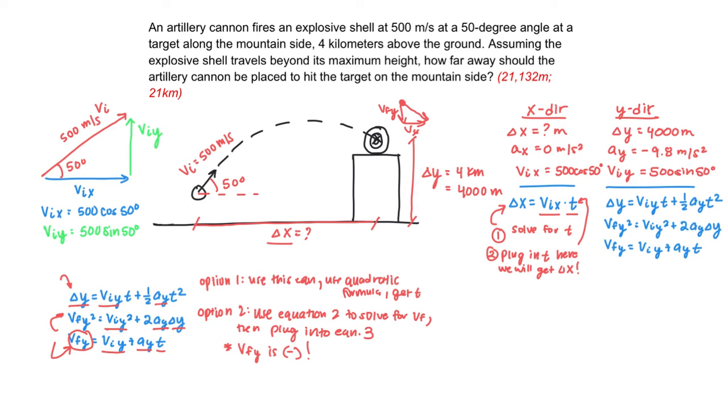So if I were to solve for VF, I'll show that over here on the right in blue. VF squared equals VI squared plus two AY delta Y. That means that my final velocity will be the square root of my initial velocity. And again, this is in the Y direction. Be careful. If you lose your subscripts, you might forget what you're doing. VI squared plus two AY delta Y.